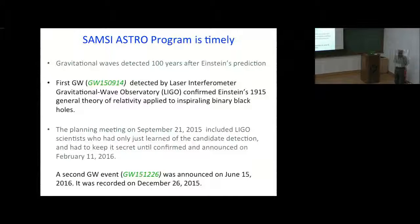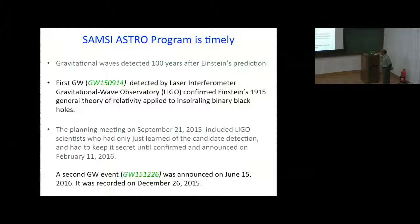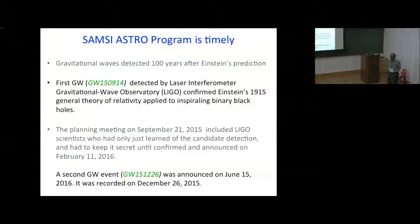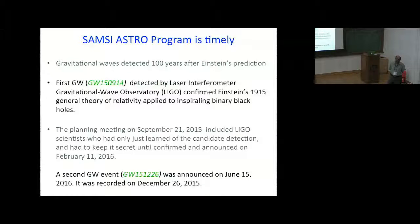This program is timely because during the planning meeting in 2015, many people involved in LIGO also attended and found it very difficult to keep secret that they had discovered the first gravitational wave — they were not allowed to say anything about it until it was publicly announced in the following January. So we didn't know anything about gravitational waves at that time, but they knew, and that really helped us in forming various groups.